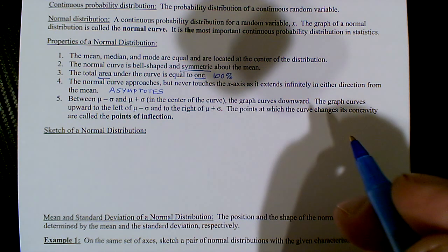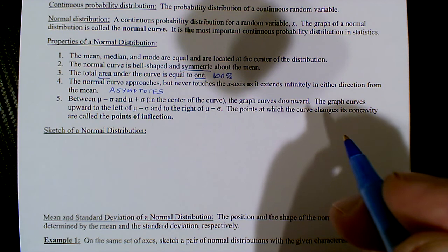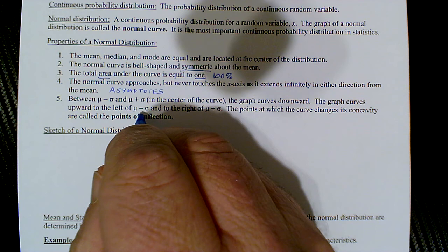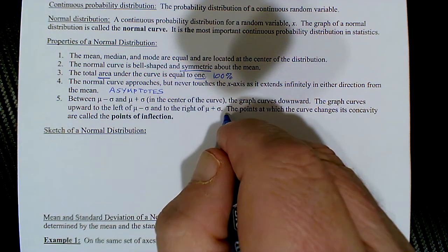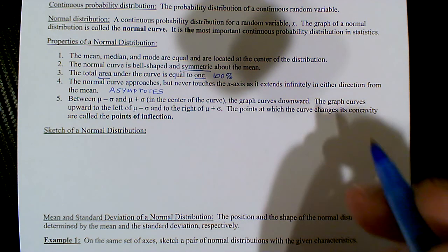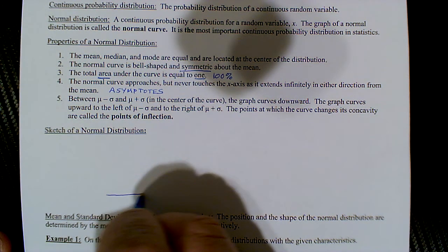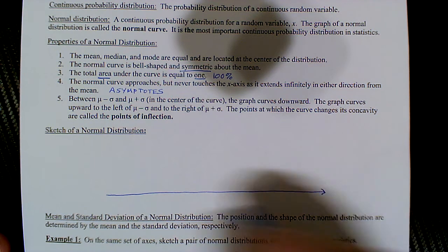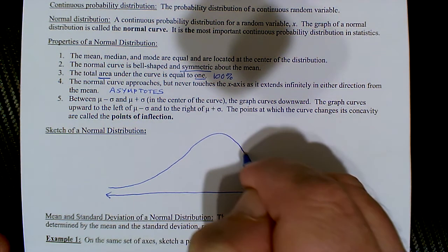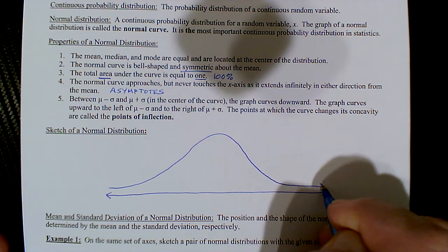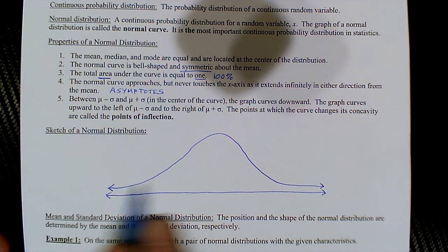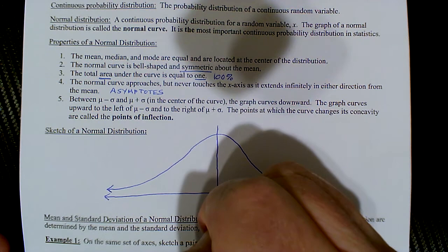The fifth property is really special: there's a point of inflection — a change in concavity — at mu minus sigma and mu plus sigma, one standard deviation above and below the mean. To sketch the normal distribution, draw a horizontal line for the x-axis and draw the standard bell-shaped curve above it, staying above the x-axis to indicate the asymptotes. It's symmetrical about the middle, which we always label as the mean mu.